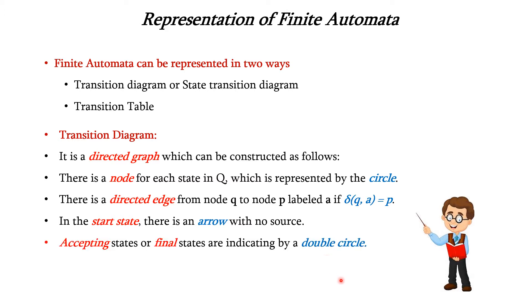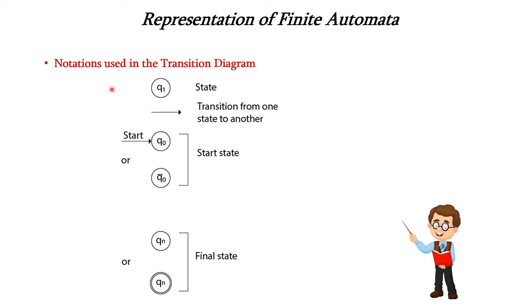In the start state, there is an arrow with no source. Accept and final states are indicated by a double circle. The circle represents a particular state, and the arrow indicates the transition from one state to another. The start state can be represented as an arrow with no source indicating the initial state, or written as Q0-bar. The final state can be indicated either as Qn or as a double-circled Qn.